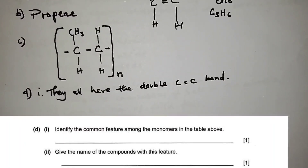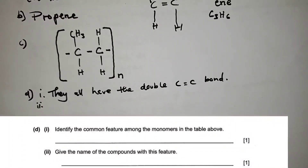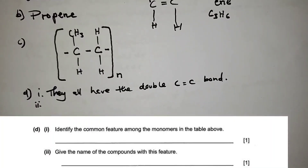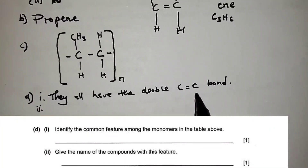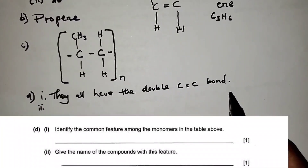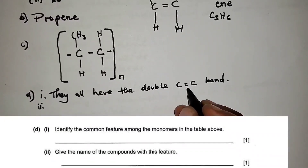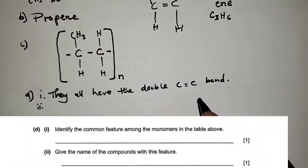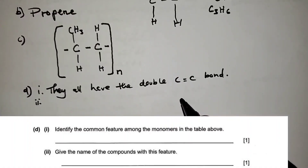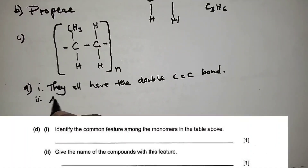D2: give the name of the compound — or the family/homologous series — with this feature, meaning the double bond. The compounds with this feature are alkenes.